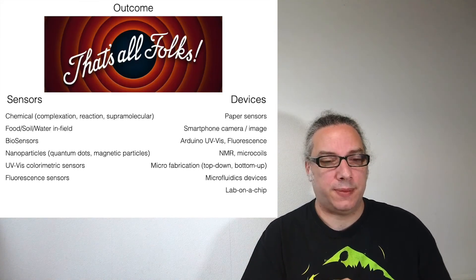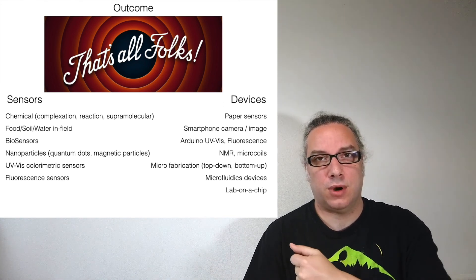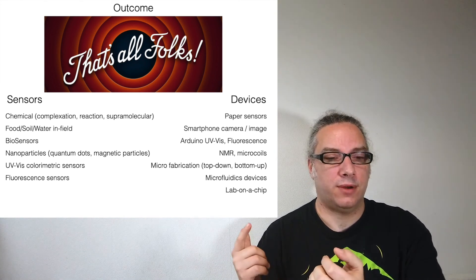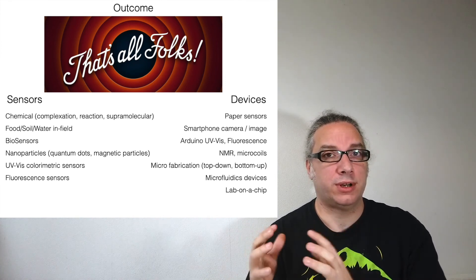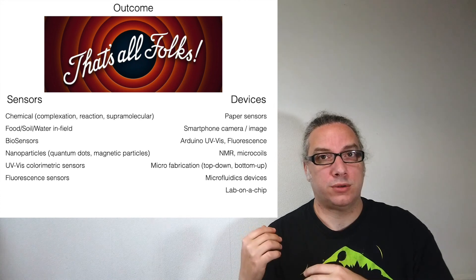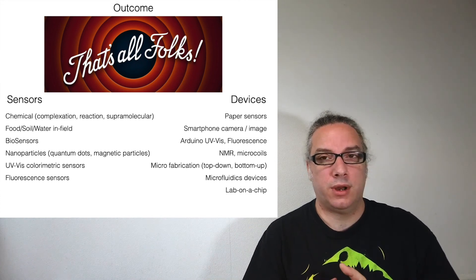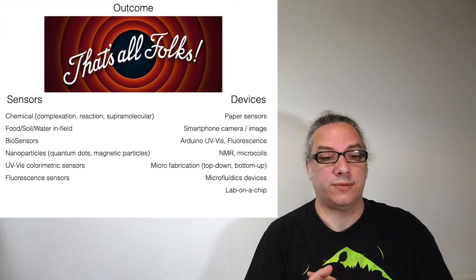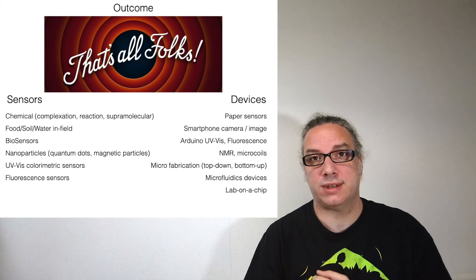With this, just a sum up—what are we going to see? We are going to see a lot of different sensors. We are going to see how a chemical sensor works, if you have a complexation, if they are working for reaction or if you have a supramolecular interaction. We are going to see where to use those sensors—for example, in food, in soil, in water. We are going to see also a lot of different biosensors, nanoparticles, how to use the UVVs, how to make a colorimetric sensor using the Arduino, and also some fluorescent sensors.